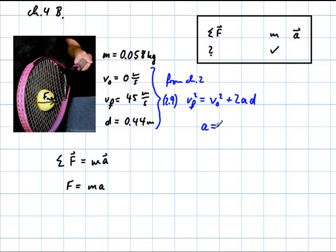So, a equals, okay, this fraction bar doesn't look too good, v_f squared minus v_0 squared. This one actually turns out to be 0.